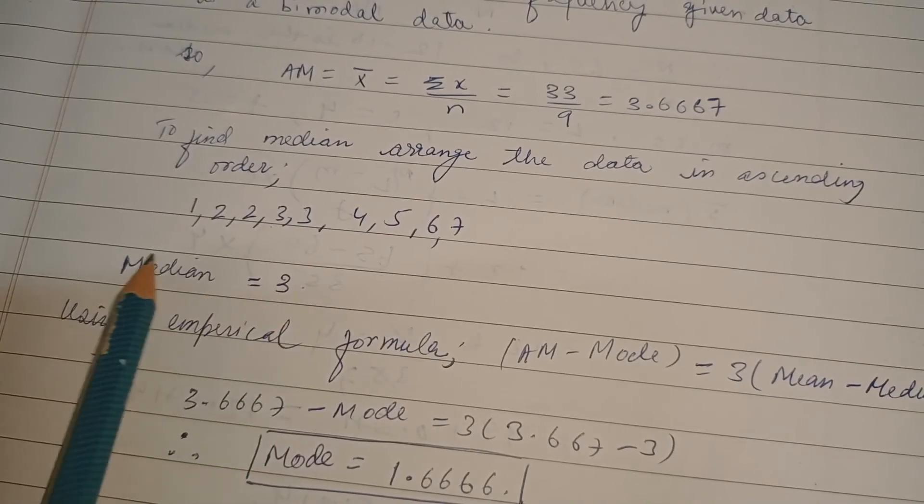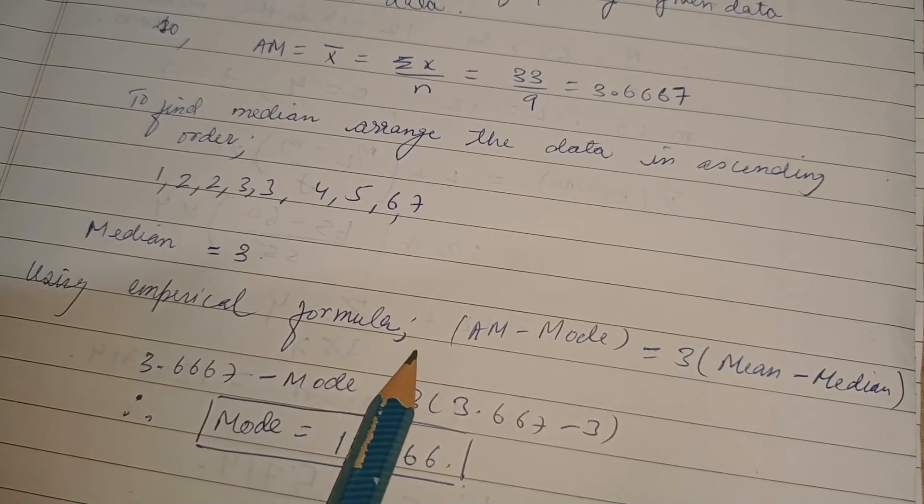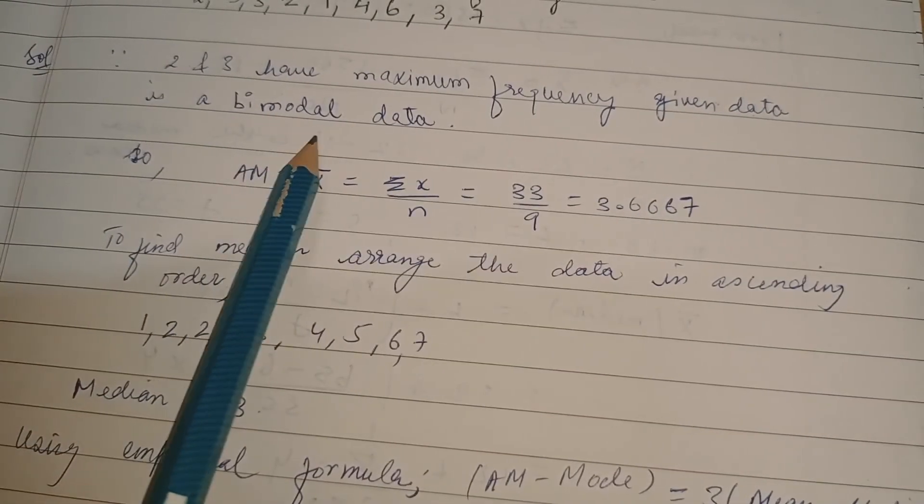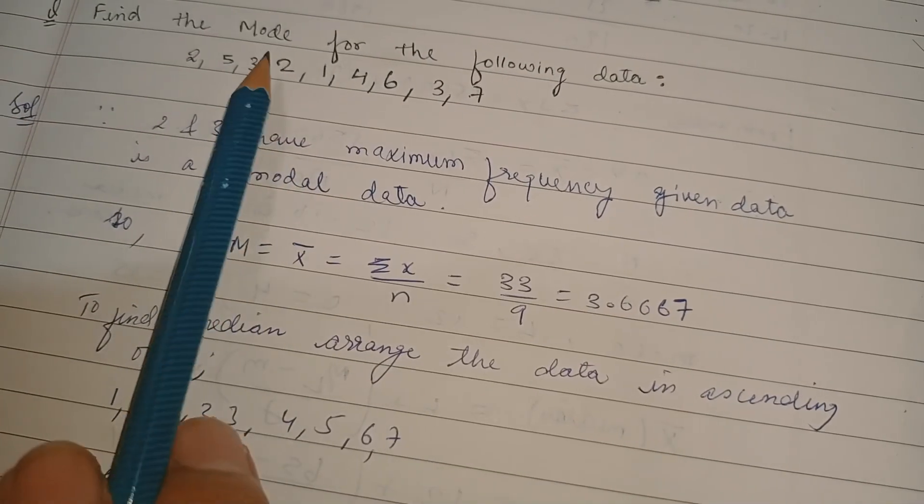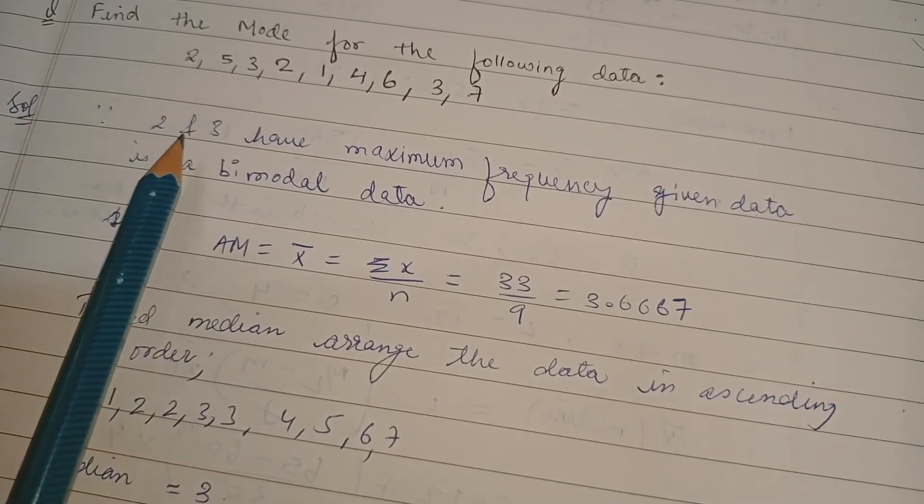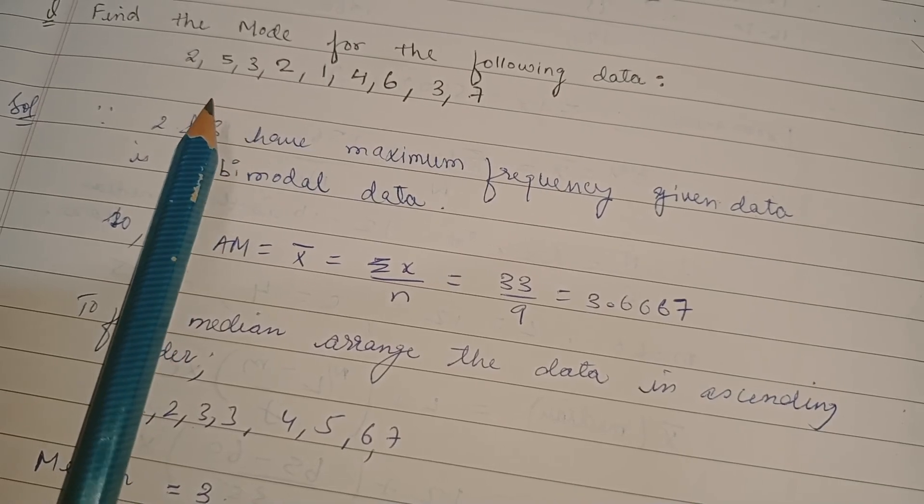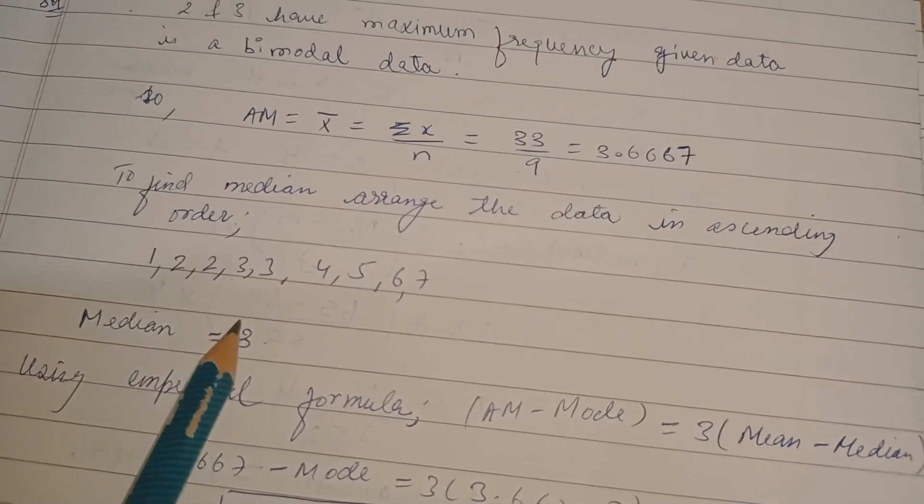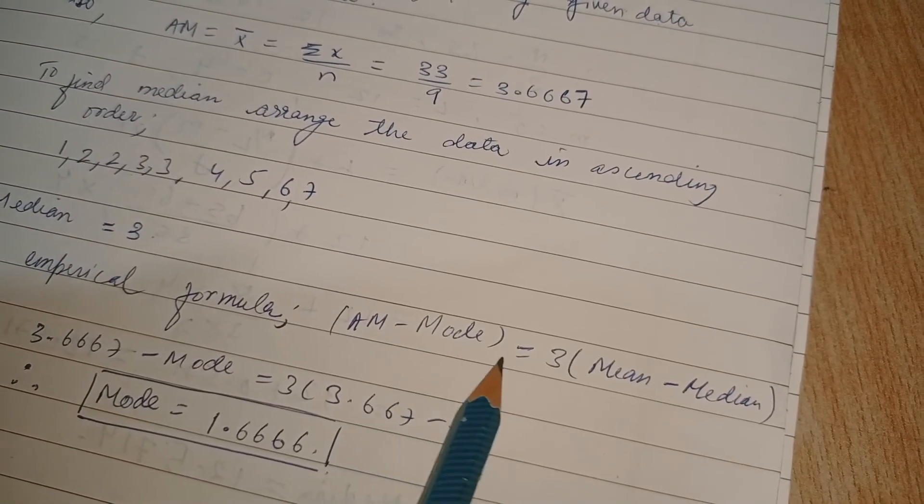Using the empirical formula, what we need to find is our mode, because here we cannot see what exactly the mode is because three occurs two times, two occurs two times, so we cannot decide by just looking at the data. If a problem comes like this to find the mode, then you have to use the empirical formula to solve. Arithmetic mean we calculated, then median we calculated, then using the empirical formula arithmetic mean minus mode equals three mean minus median, we can find the mode. When we solve, we'll get 1.666 as the mode.